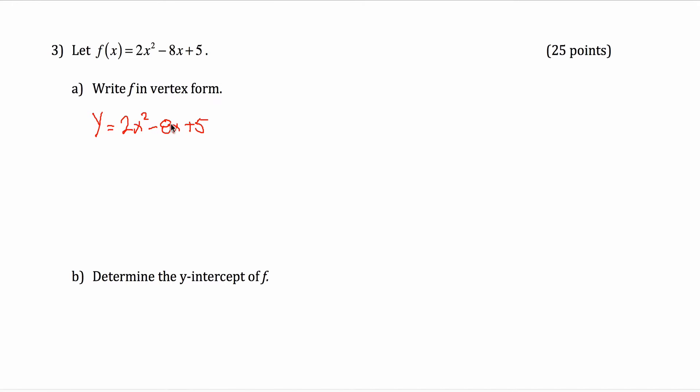Now I want to complete the square. The way we learned how to complete the square is we needed the leading coefficient to be a 1. It's not, it's a 2. And we needed the x squared and the x terms to be all by themselves. They're not. There's this 5 here. So what I'm going to do is first subtract 5 from both sides of the equation. So then I get y minus 5 equals 2x squared minus 8x. And then I'm going to divide both sides of the equation by 2.